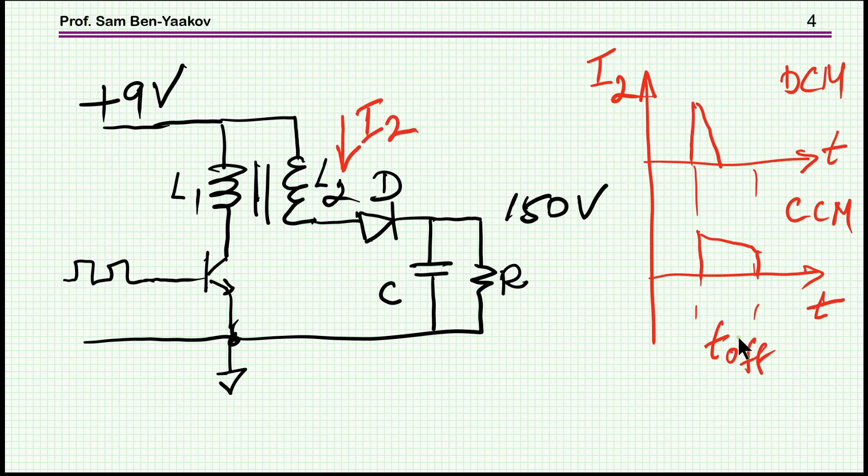And then during the T_off in the DCM, we're going to see the current going down to zero. And in the case of CCM, it will go down to a certain level and then it will go up again. So this is the regular operation. Again, the difference is that the secondary is connected to the primary voltage.